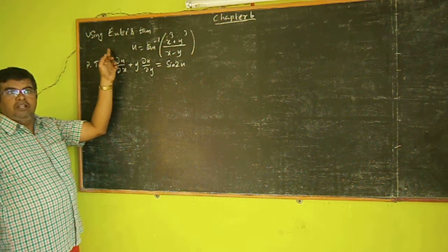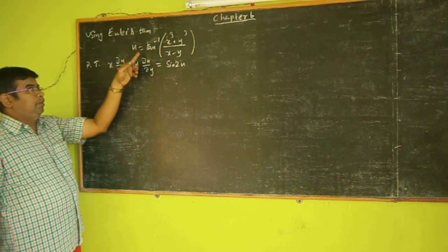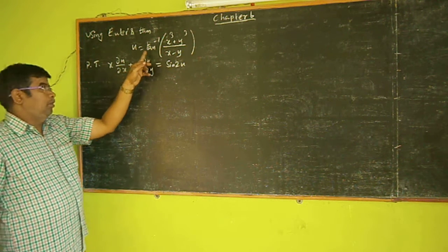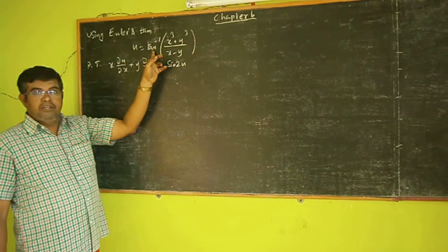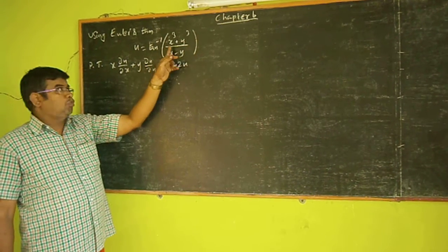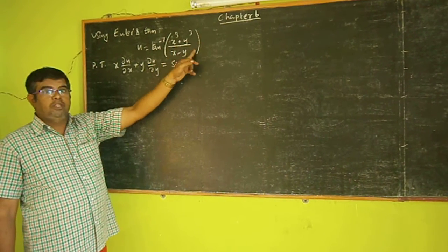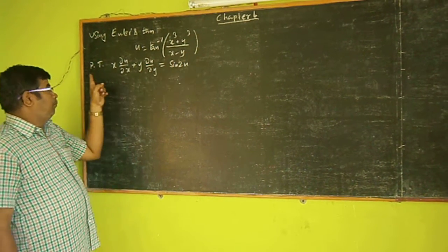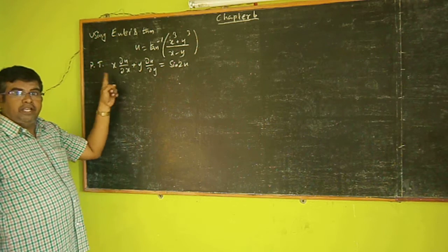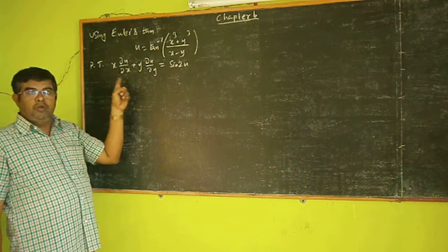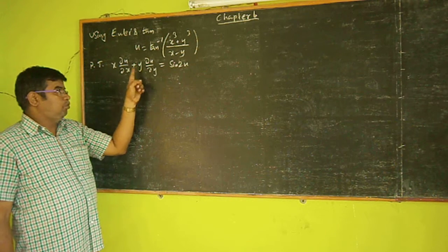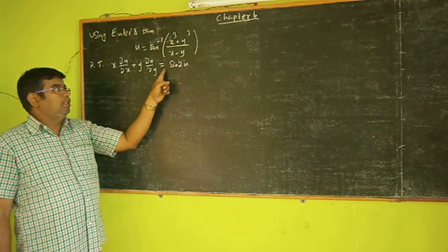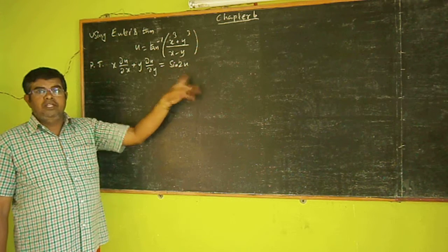Euler's theorem: given u equal to tan inverse of x cube plus y cube divided by x minus y, prove that x into ∂u/∂x plus y into ∂u/∂y is equal to sin(2u).